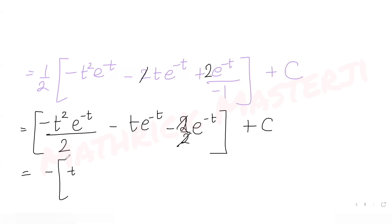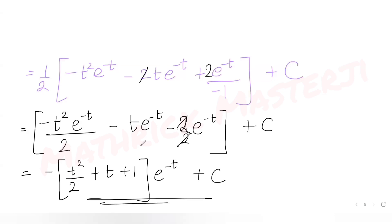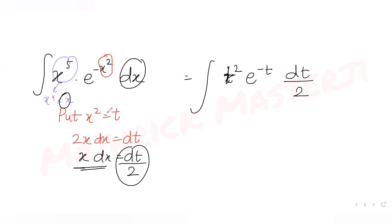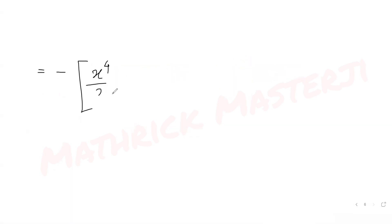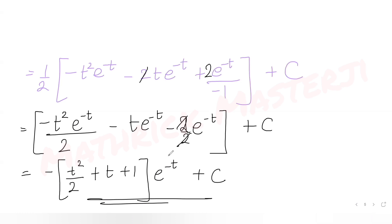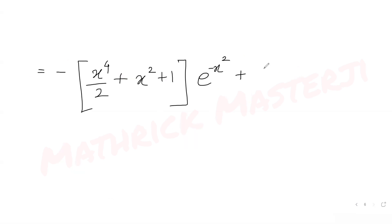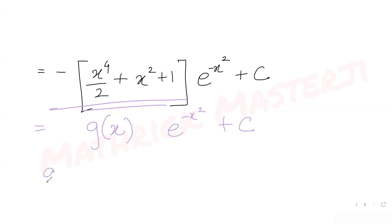Taking out the minus sign as a common factor, the result is minus (t square over 2 plus t plus 1) times e raised to minus t plus c. Resubstituting t as x square, this becomes minus (x raised to 4 over 2 plus x square plus 1) times e raised to minus x square plus c. Comparing with g(x) times e raised to minus x square plus c, we identify g(x) as minus (x raised to 4 over 2 plus x square plus 1).